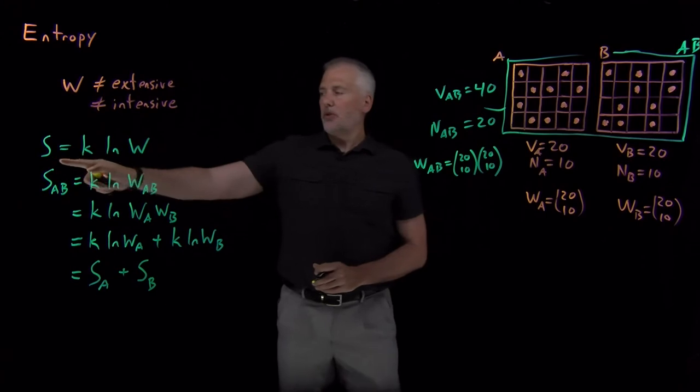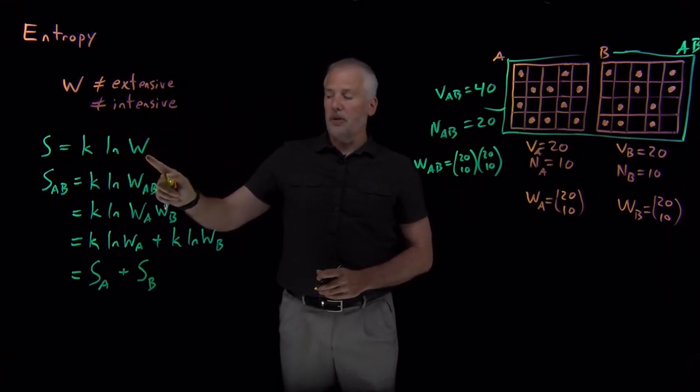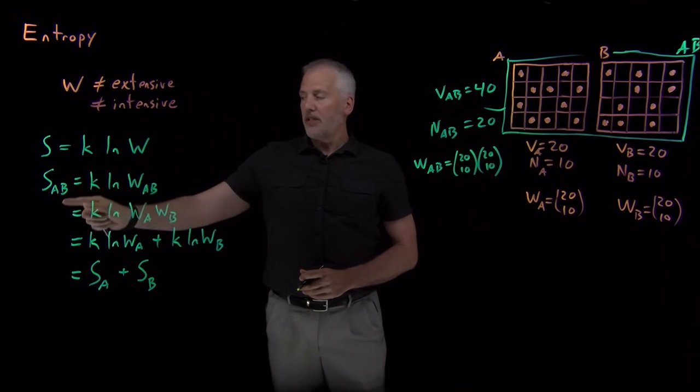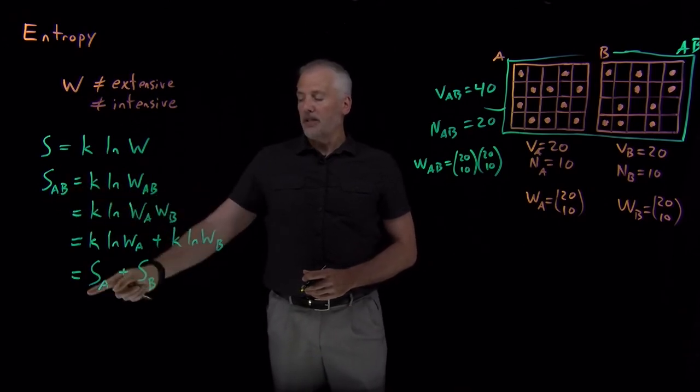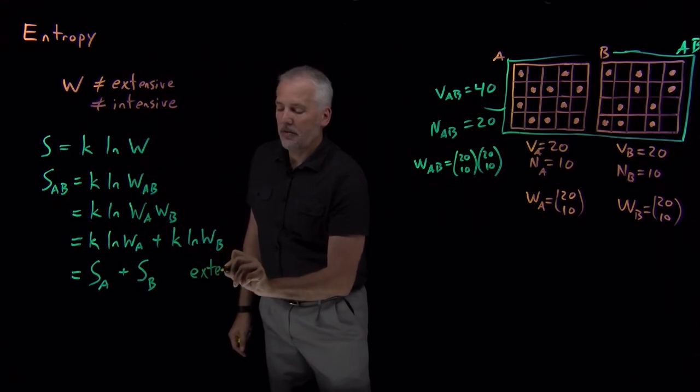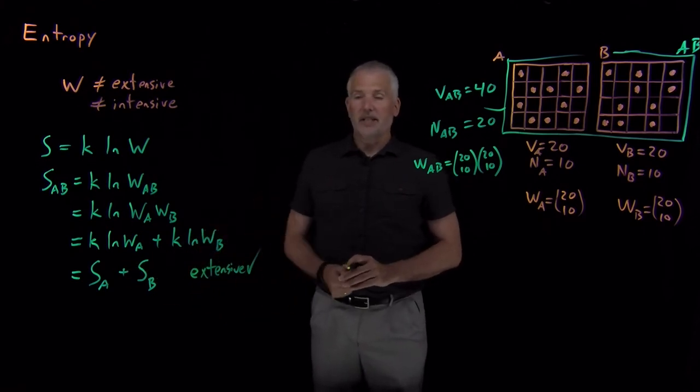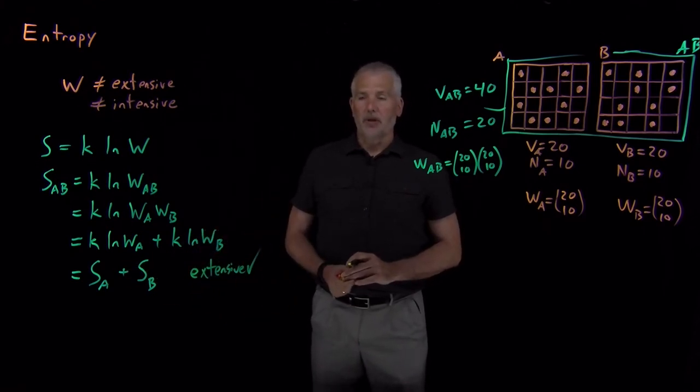So the reason to define this new property the way we defined it, as the natural log of the multiplicity, is because that guarantees that the S for a combined system will be the sum of the S values for the two individual systems, which means that S is an extensive property of the type that we're looking for.